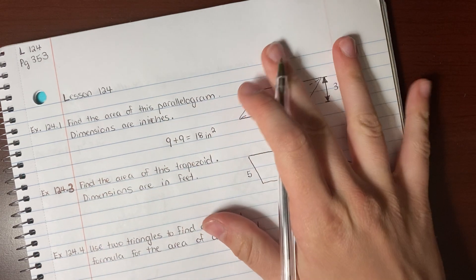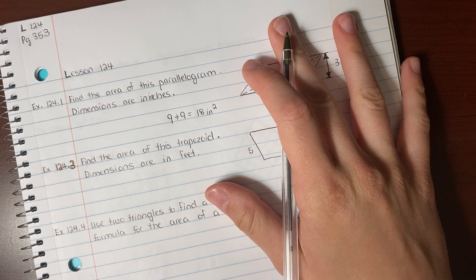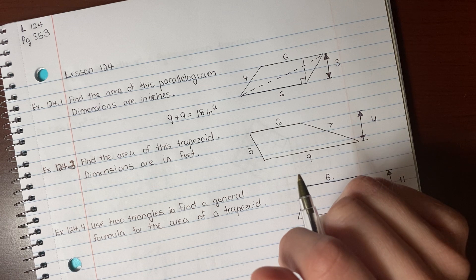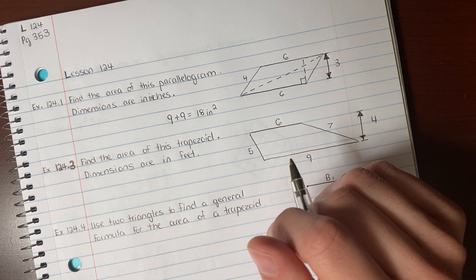That one was easy. Now, if you look at 124.3, skipping 124.2, it says find the area of this trapezoid. Dimensions are in feet.